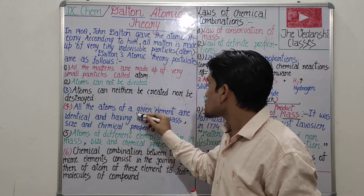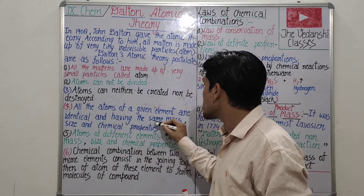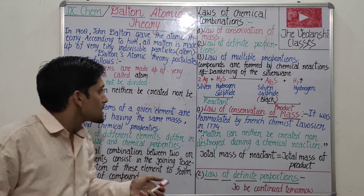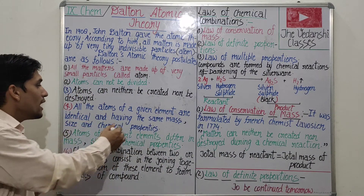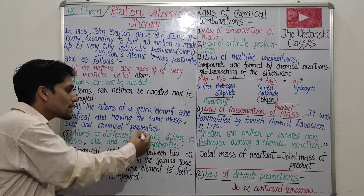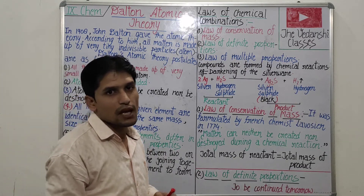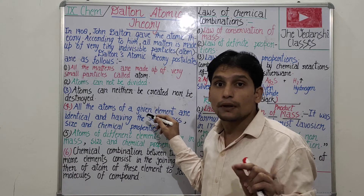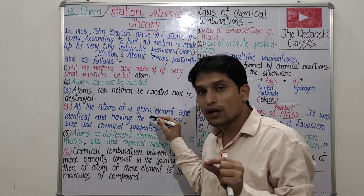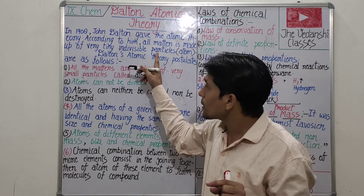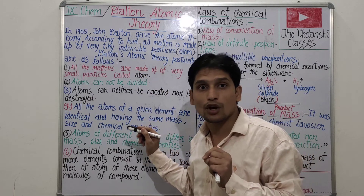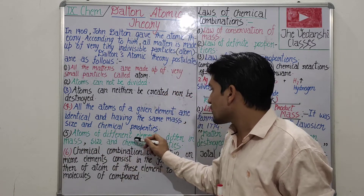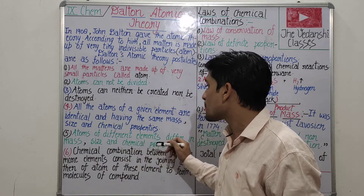Fourth postulate: all the atoms of a given element are identical and have the same mass, size, and chemical properties. But in the case of isotopes, this is not possible — that is a limitation. Fifth postulate: atoms of different elements differ in mass, size, and chemical properties.